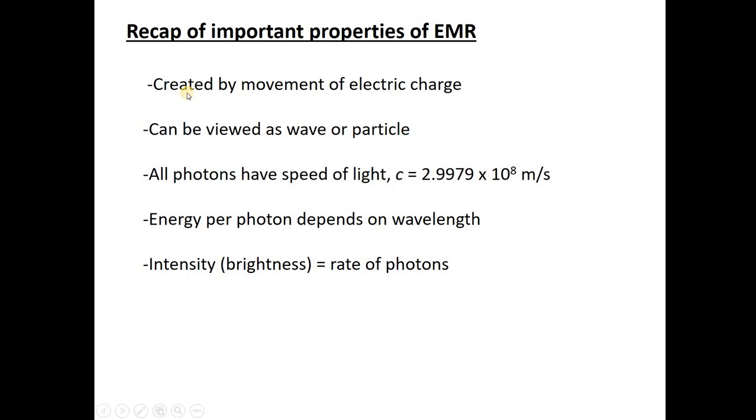Okay, so in summary, electromagnetic radiation is created by movement of electric charge. It can be viewed as a wave or a particle. All photons travel at the same speed, which is the speed of light. The energy per photon depends on its wavelength or sometimes we would say frequency, which is the inverse of wavelength. And the intensity or brightness is controlled by the rate of photons. Thanks for listening everybody, have a great day.